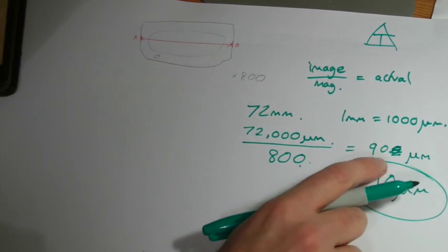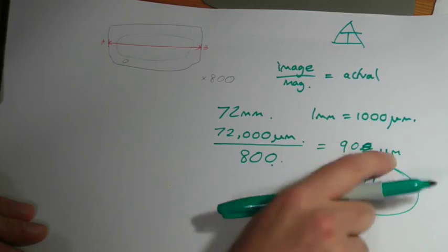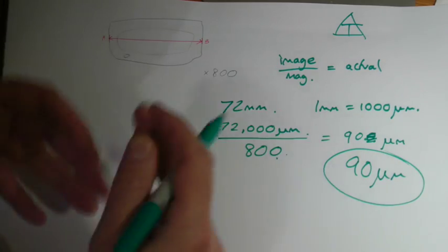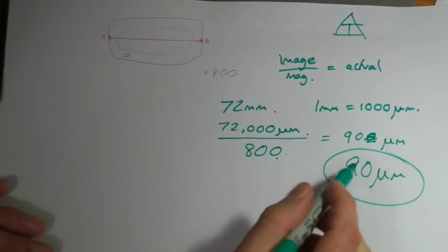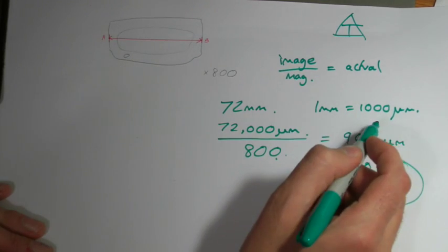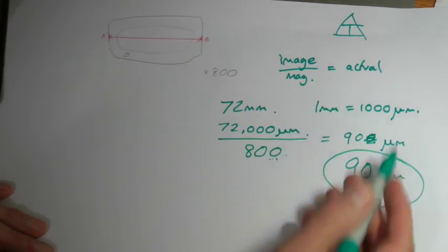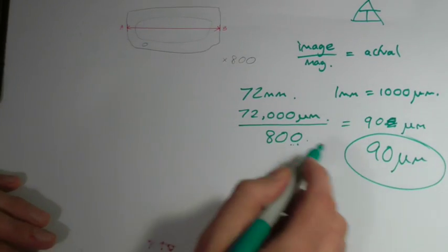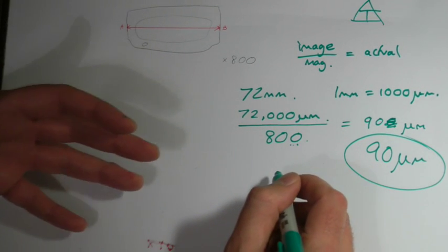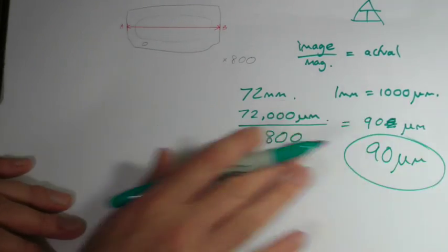So the size of that cell is 90 micrometers. Now, the reason I realized I've made a mistake halfway through is I know that plant cells aren't 900 micrometers long. It's nearly a millimeter. Typically they're maybe 50, 60, 70, 80 microns, whatever it may be. So I know straight away from, hang on, my number just didn't seem right there. Something's gone wrong. So I can go back and think, where have I gone wrong? Ah, I put 80 rather than 800. And I'm checking myself.